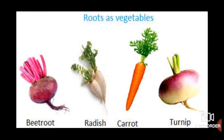Roots of some plants are swollen and fleshy because of the food stored in them. These are eaten as food. Carrot, turnip, radish and beetroot are some common edible roots.